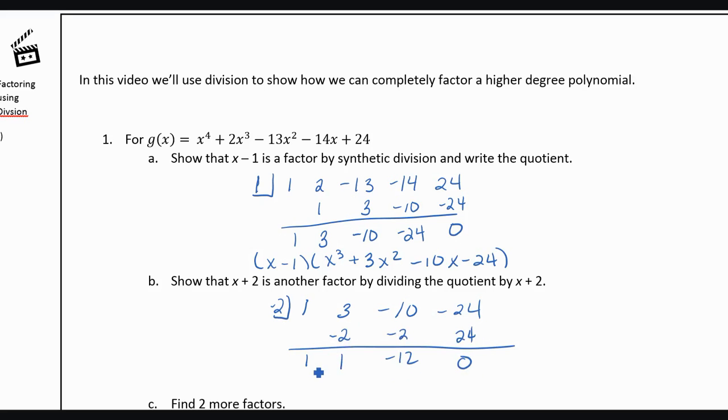So this is telling us that this other part, that really now we have x minus 1, our factor from before, x plus 2, the factor we just did, times, that was an x cubed, so this is x squared plus x minus 12.